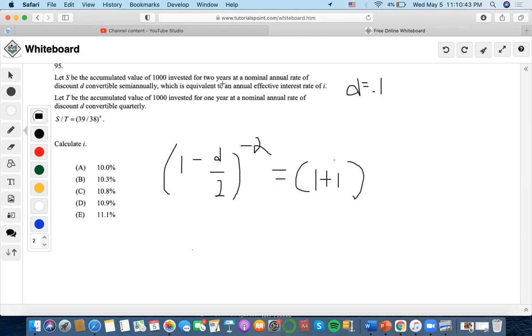So invested for two years at a new annual nominal rate of discount convertible semiannually. Now what we're going to do is find what i equals to.